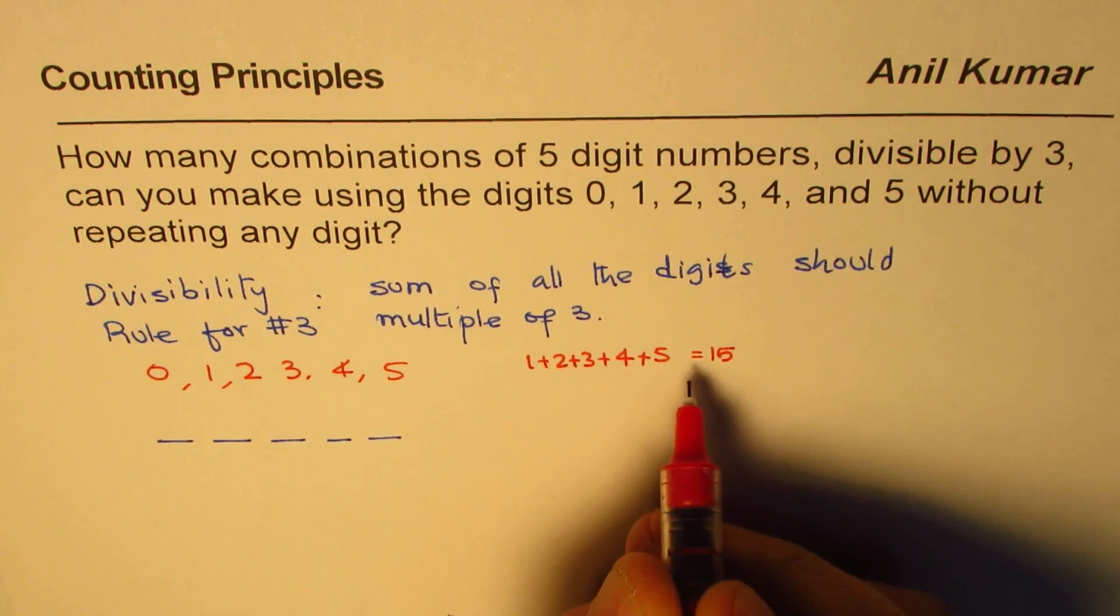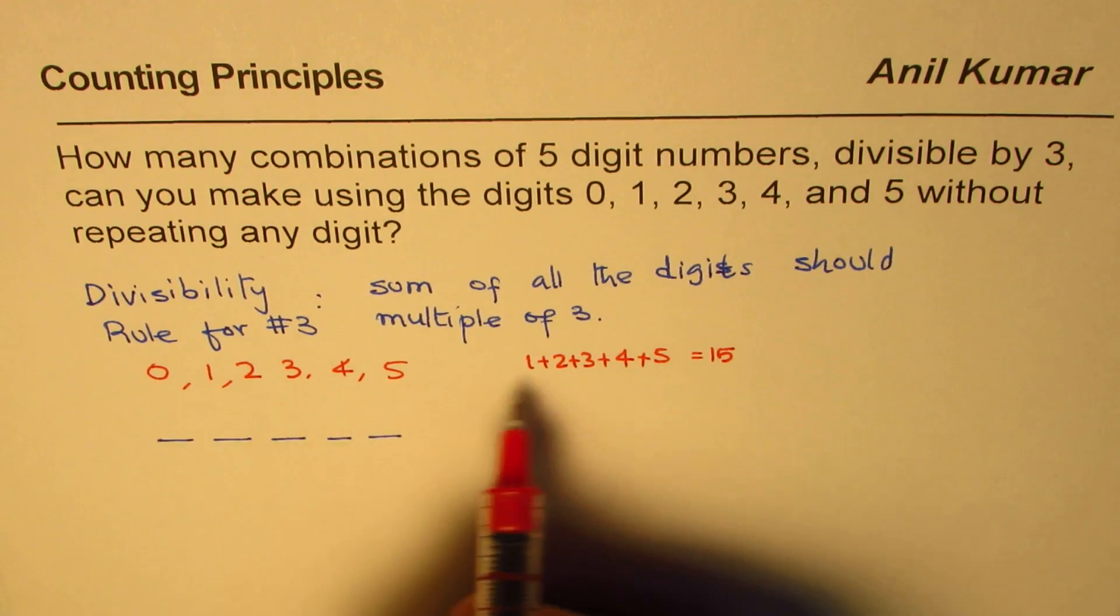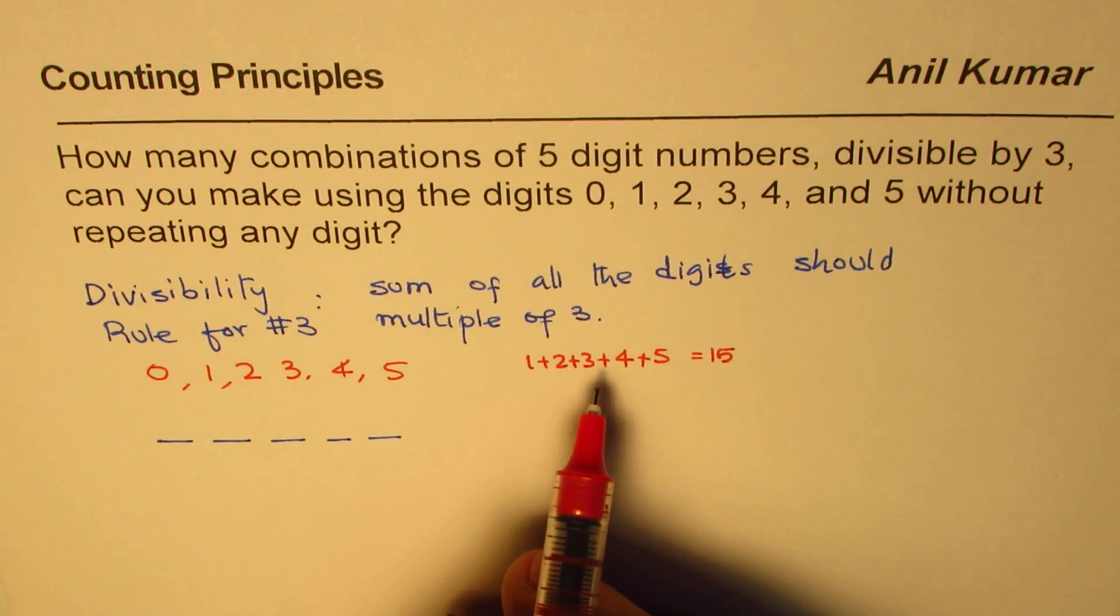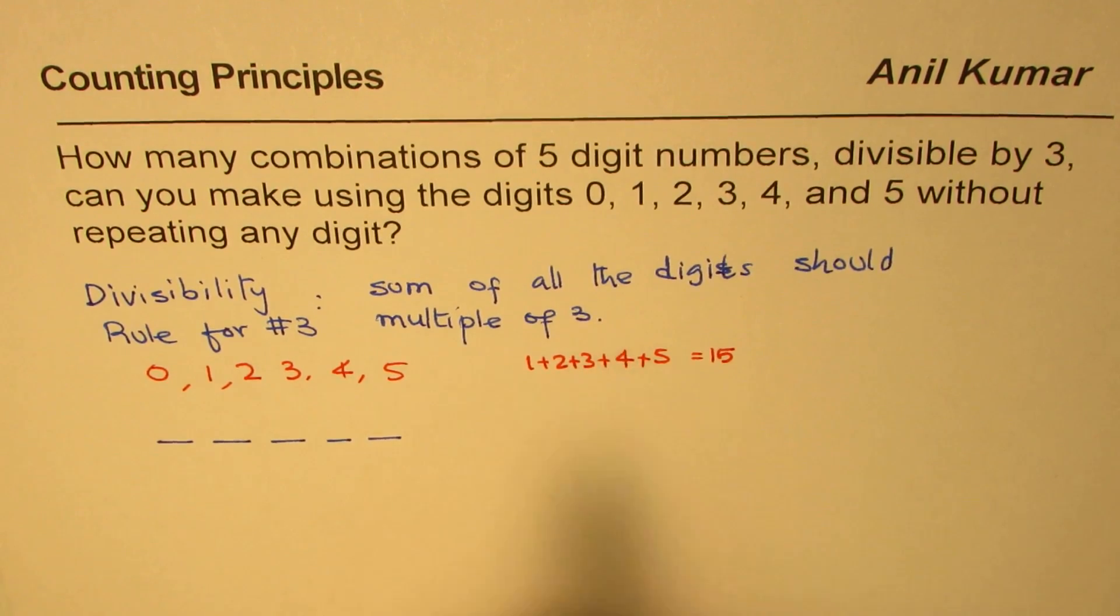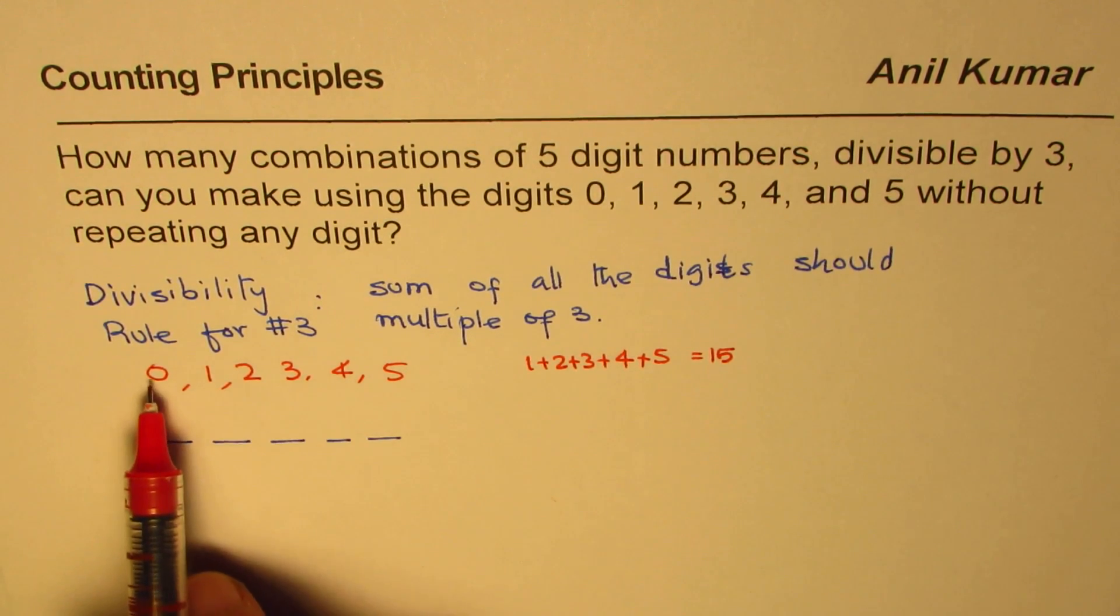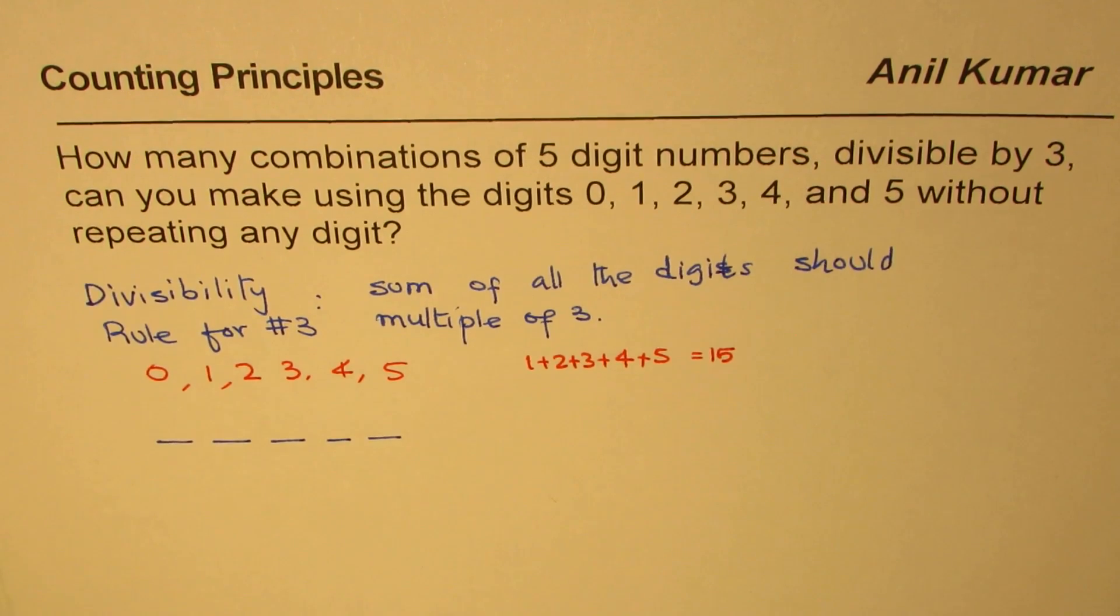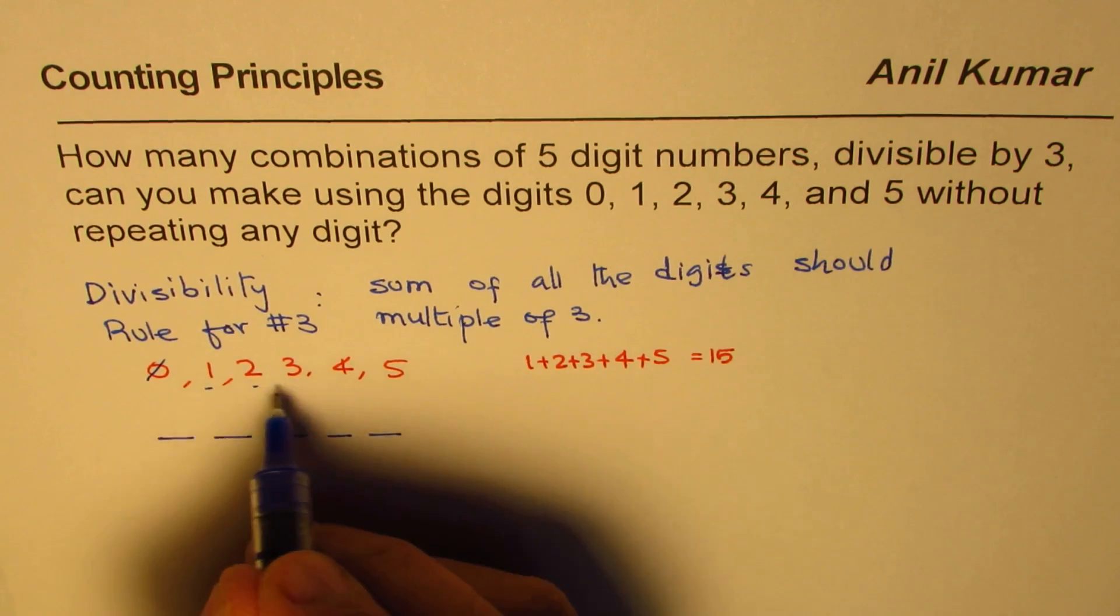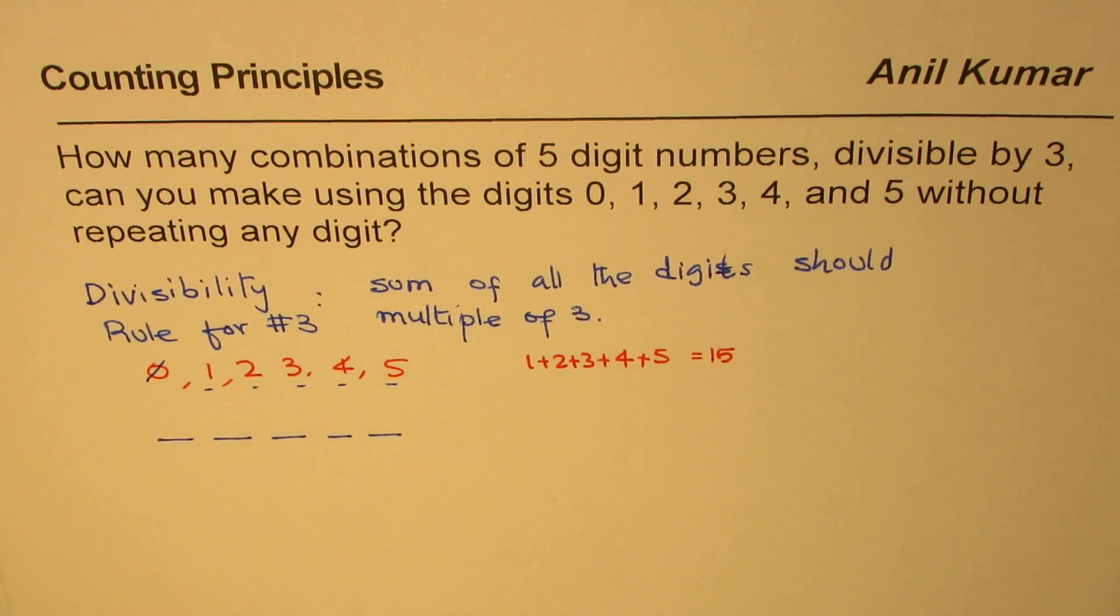So, when you add all these numbers, 0 plus 1 plus 2 plus 3 plus 4 plus 5 equals 15. Since the sum is 15, all these numbers can actually, when put together, form a number which is multiple of 3. Now, out of 6, we have to select any 5. So, let's disregard 0 for the first time and then we will see how to make a number using these five digits. So, we'll take 1, 2, 3, 4, and 5.